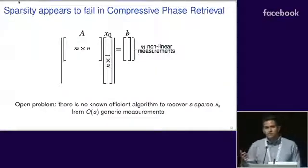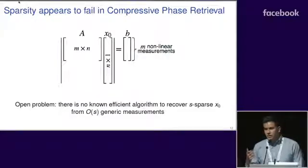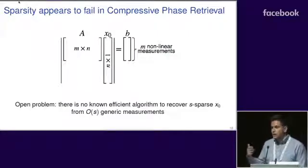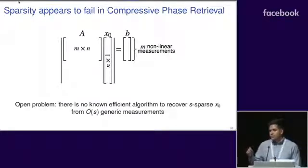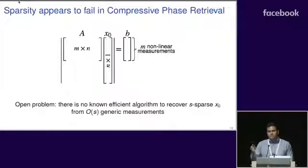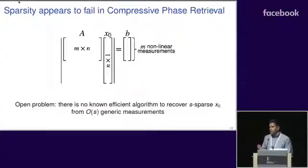In this problem, we want to recover an image x₀ from some nonlinear measurements, which is the absolute value of linear measurement. Here we have M nonlinear measurements, where each entry of the absolute value of A times x₀ is a single measurement. There's actually an open problem in the phase retrieval community,